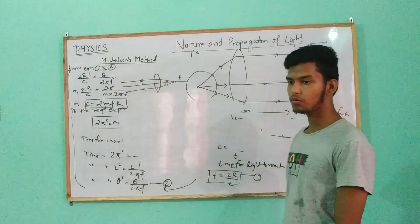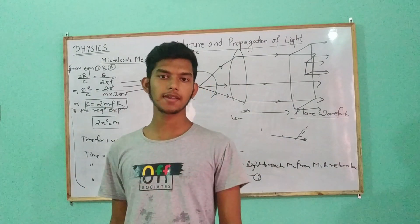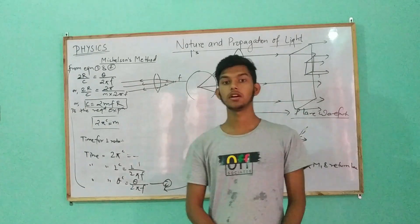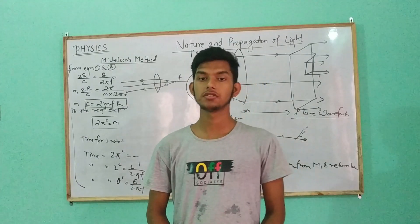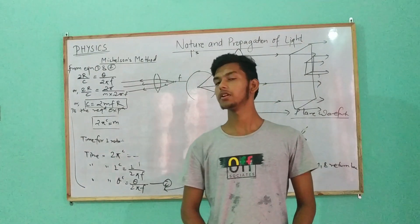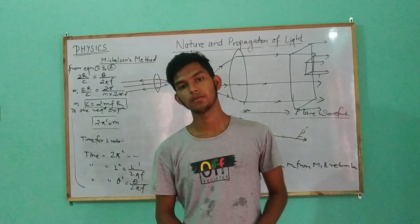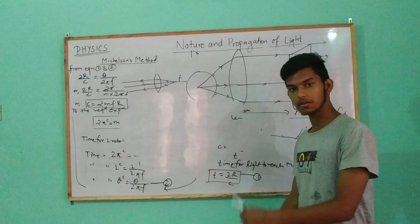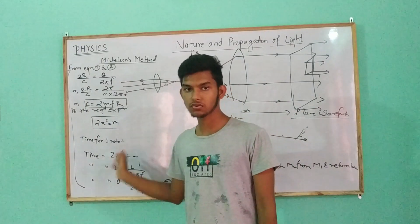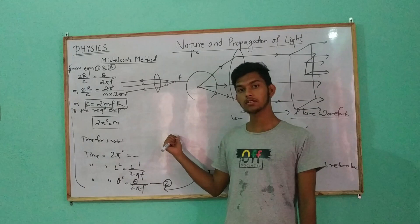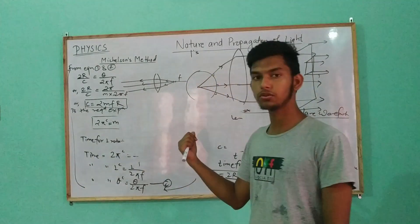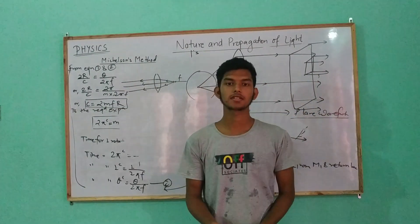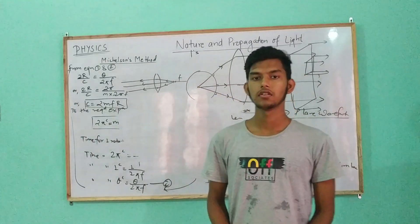So we have completed the first chapter. The next chapter we have to look at is Interference and Superposition. We have to look at the coherent source and Young's Double Slit Experiment. I will see you in the next chapter and the next video. Please subscribe to this channel, stay tuned, and keep watching the videos. Thank you very much.